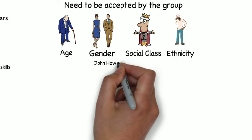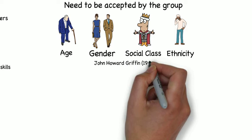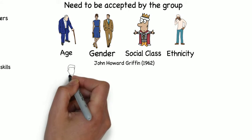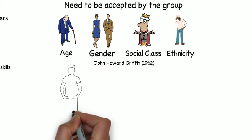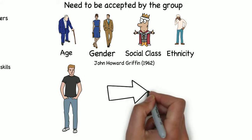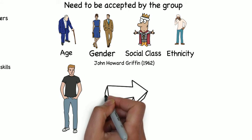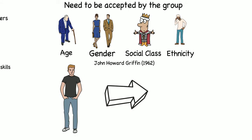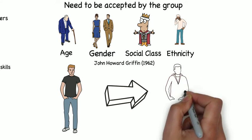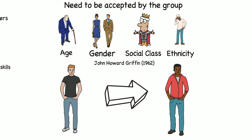There have been cases of people going to extreme lengths to be accepted. For example, in 1962 John Howard Griffin used medication and sun lamp treatments to change his skin colour in order to experience racism in the deep south of the USA.